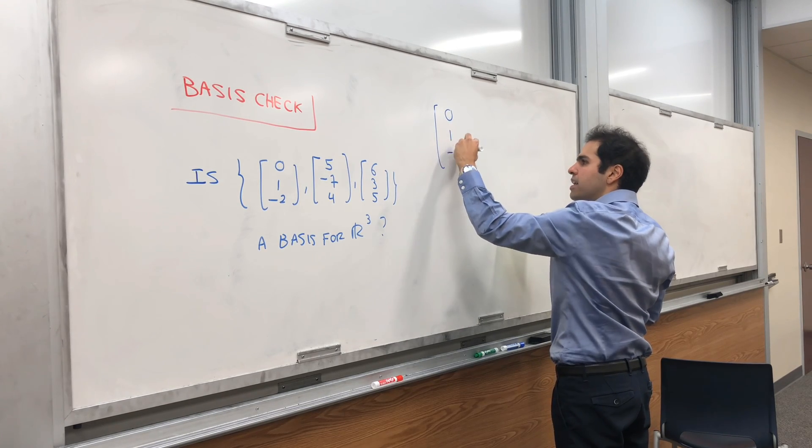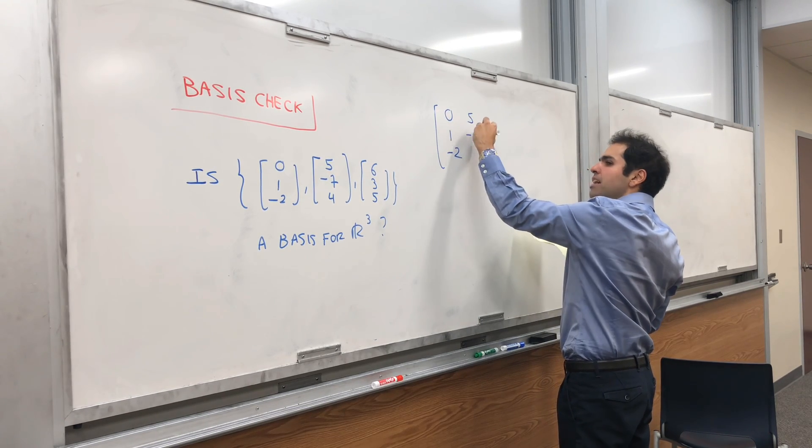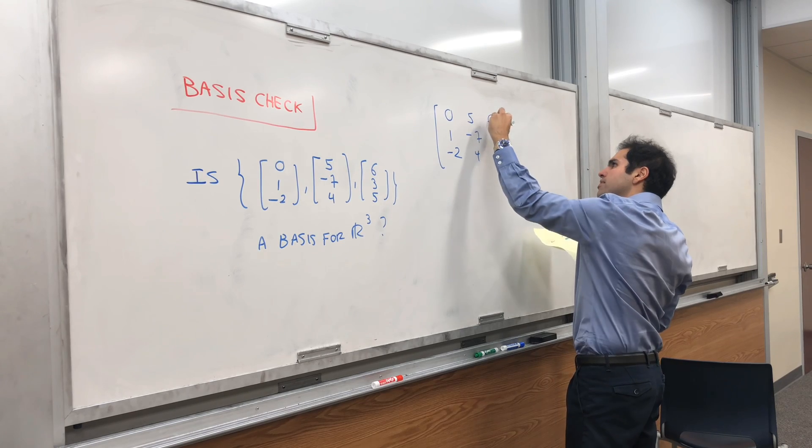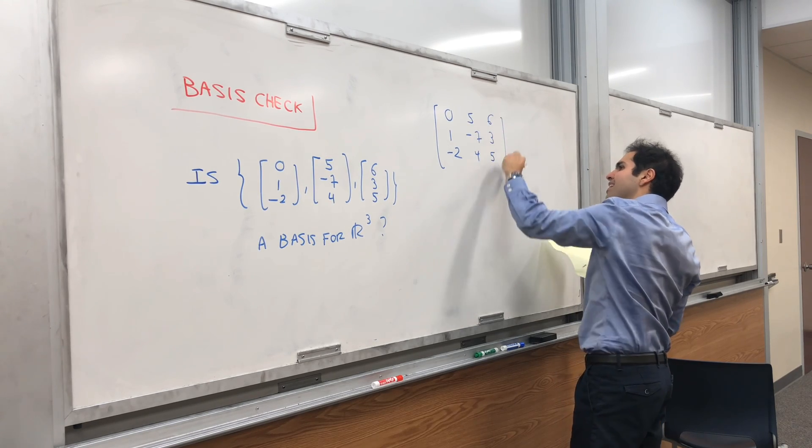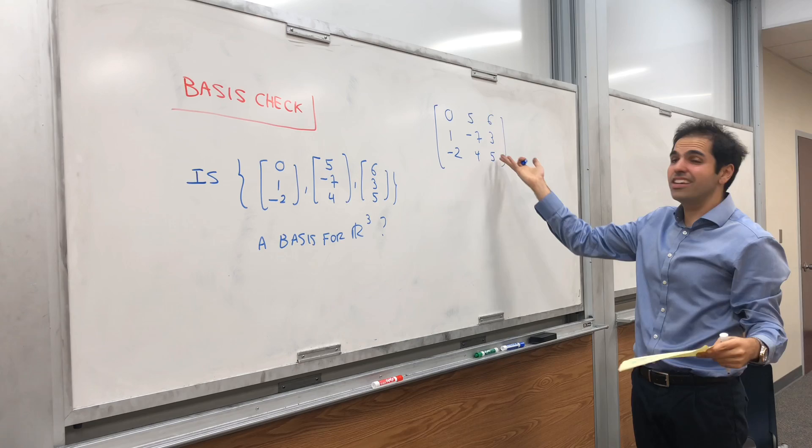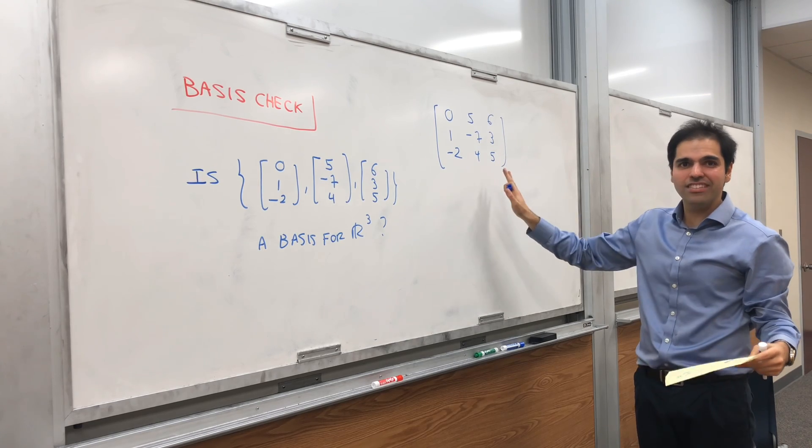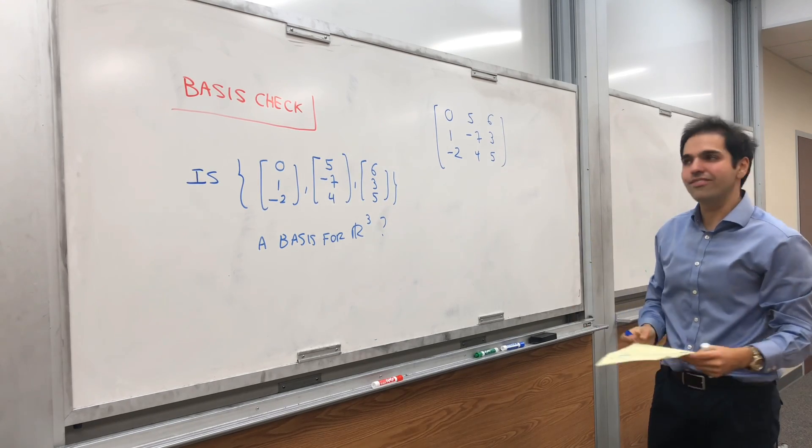So, 0, 1, minus 2, 5, minus 7, 4, 6, 3, 5. And yes, determinant lovers, you could just take the determinant of this. If it's non-zero, then it is, in fact, a basis.